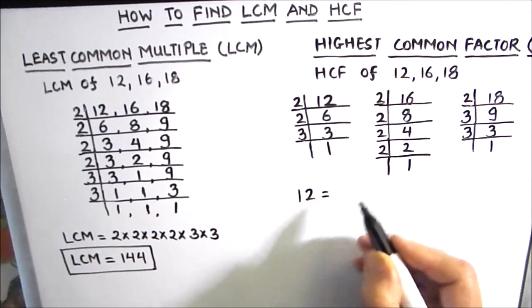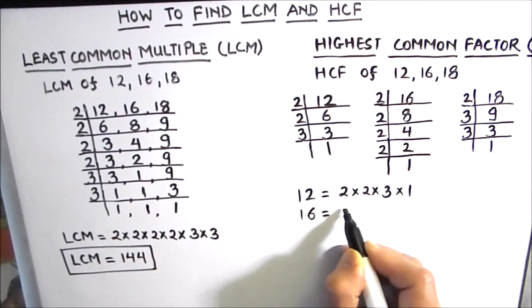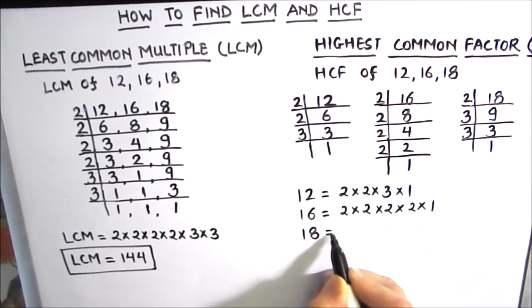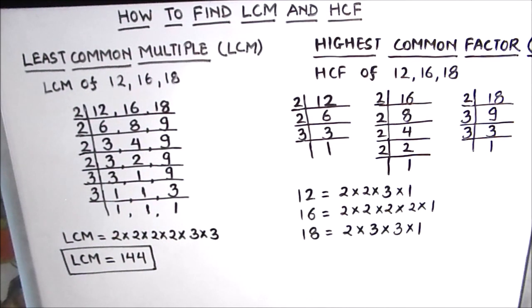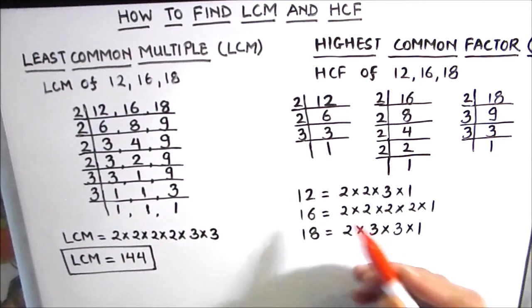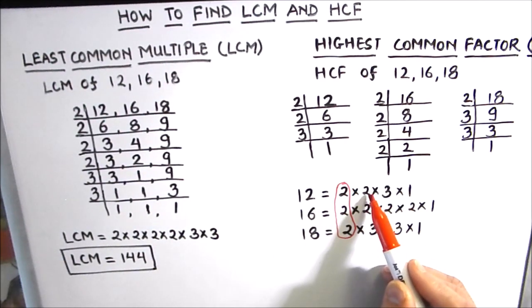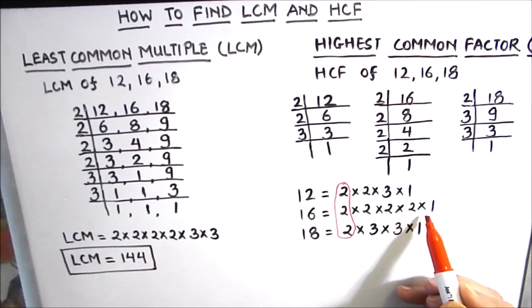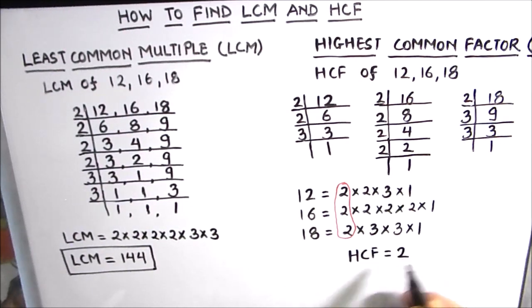Now we have the prime factors of all three numbers: 12 equals 2 times 2 times 3 times 1; 16 equals 2 times 2 times 2 times 2 times 1; and 18 equals 2 times 3 times 3 times 1. For the HCF we take the product of all common factors. We see that 2 is common to all three numbers. There is no further common factor — 3 appears in 12 and 18 but not in 16. So the HCF of 12, 16, and 18 is 2.